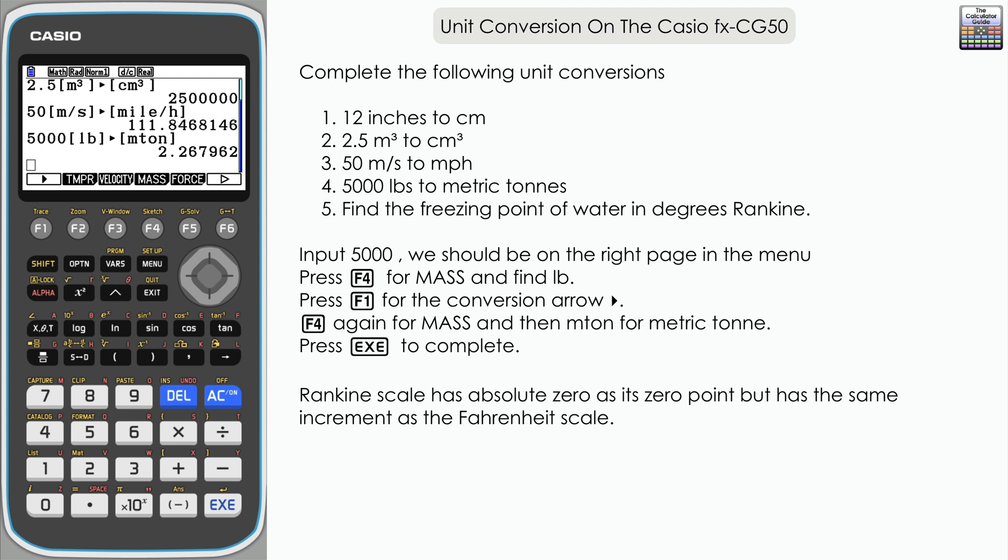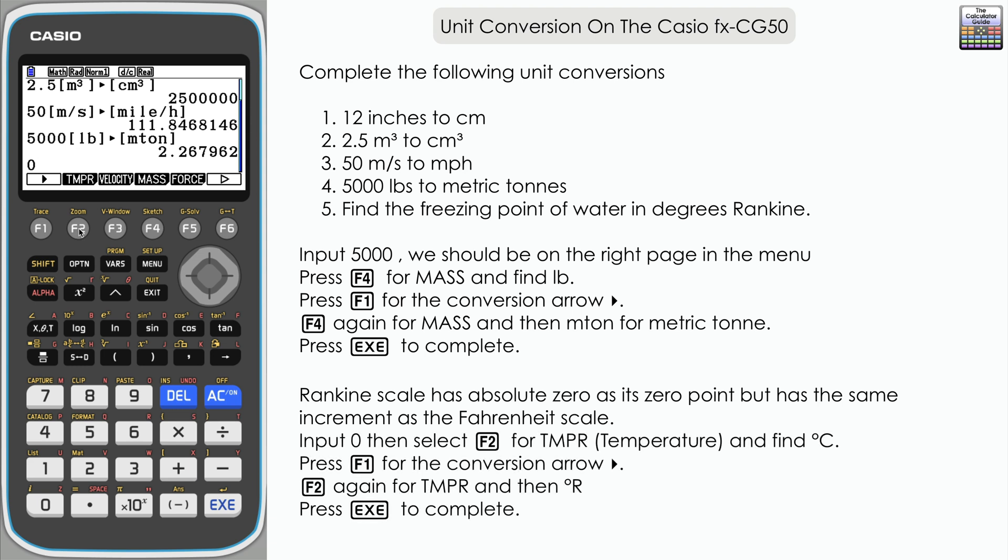So it's the freezing point of water. I do know what that is in degrees Celsius, that's probably the easiest one to do. So it's zero, F2 for temperature, and then one for degrees C. I should probably point out before I get any comments, yes let's assume that it is at sea level so that we have the standard freezing point of water at zero. Conversion arrow and then temperature, and we've got Kelvin there, degrees Fahrenheit, and then the bottom, degrees Rankine. Press execute and here we have 491.67.